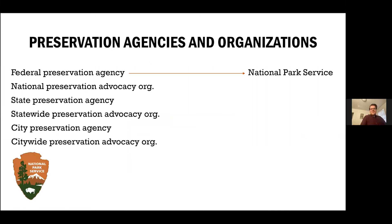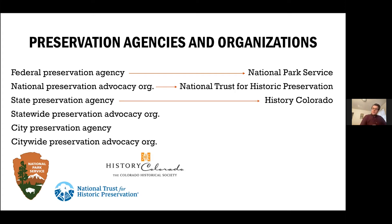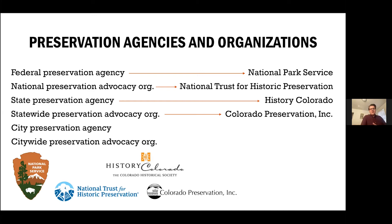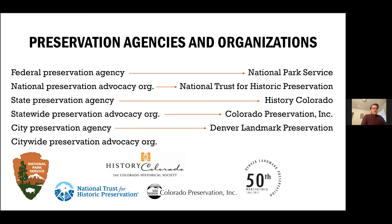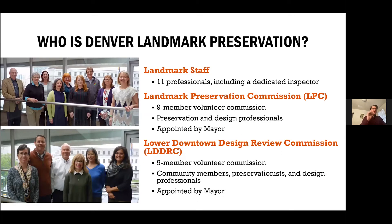Thinking about these different levels of designation, we have different agencies and organizations involved in those processes, aligning to federal, state, and local levels. At the federal level there is the National Park Service, and then there's also a national nonprofit, the National Trust for Historic Preservation. At the state level, we have History Colorado, which is the State Historic Preservation Office — kind of an intermediary between the local and the national — and we also have a statewide preservation advocacy organization, Colorado Preservation Inc. The city of Denver also has its own preservation agency, Denver Landmark Preservation, and we have a local nonprofit, Historic Denver, which is focused solely on local preservation issues. Interestingly, all three of those levels have a presence in Denver: National Park Service offices, History Colorado, and the National Trust also has an office in Denver.